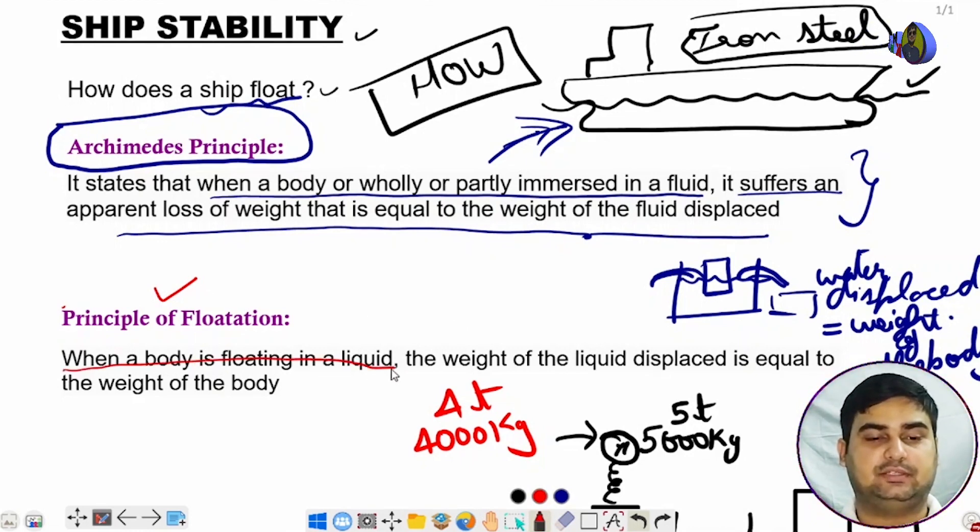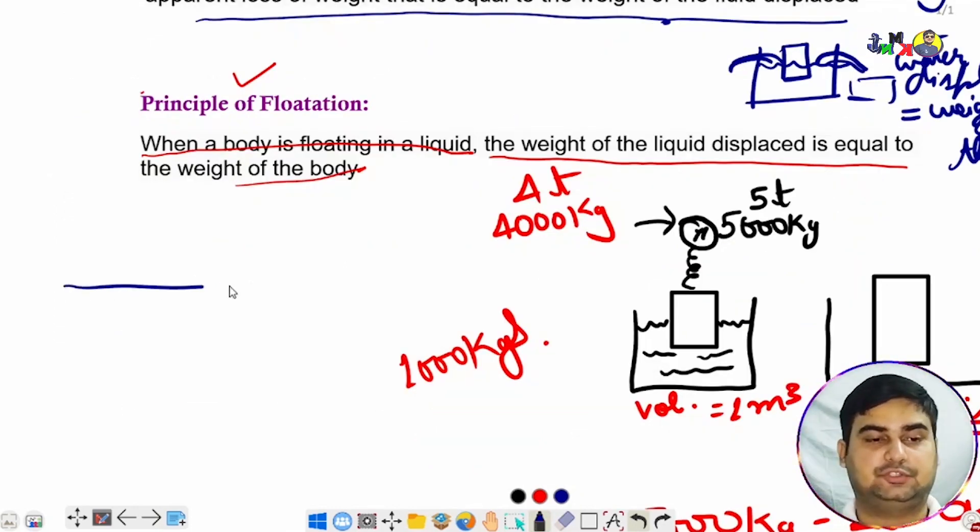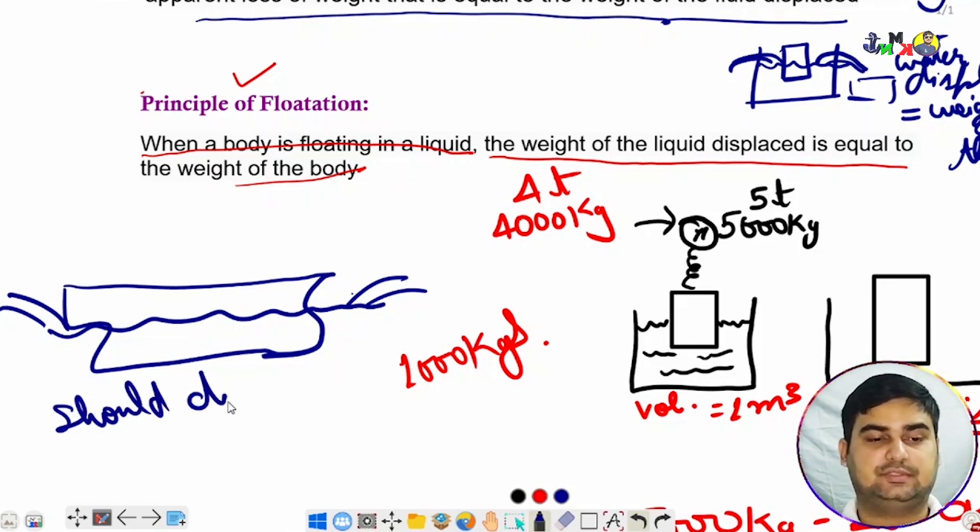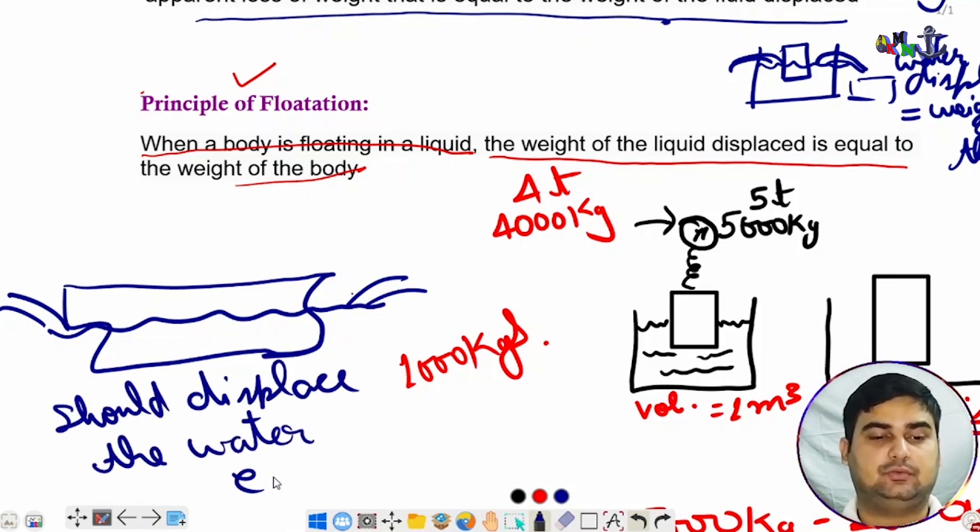When a body is floating in a liquid, like a ship floating in water, the weight of the liquid displaced is equal to the weight of the body. For a ship to float in water, it should displace water equal to its weight.